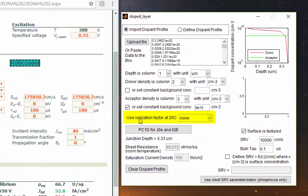You'll notice that in the PC1D interface, we have this box called use ionization factor at 25 degrees. And what that means is, although here we have imported the net active donor concentration, meaning the substitutional phosphorus atoms concentration, not every phosphorus atom is ionized. Here we're going to account for this by choosing phosphorus.